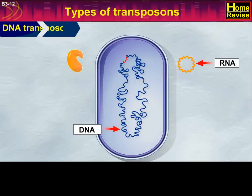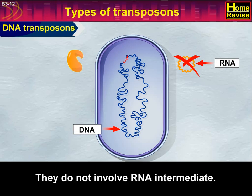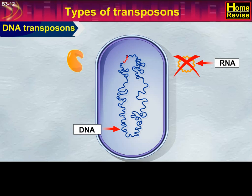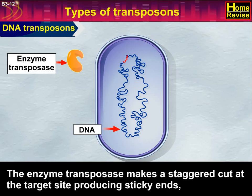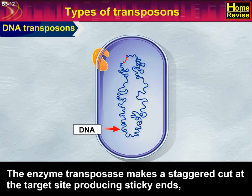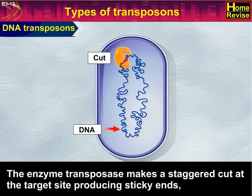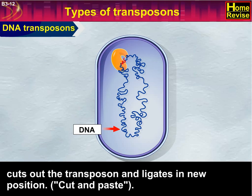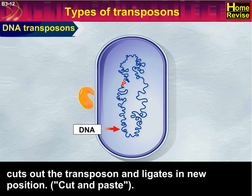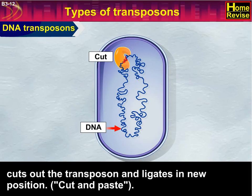DNA transposons do not involve an RNA intermediate. The enzyme transposase makes a staggered cut at the target site, producing sticky ends, cuts out the transposon, and ligates it in a new position. That is cut and paste.